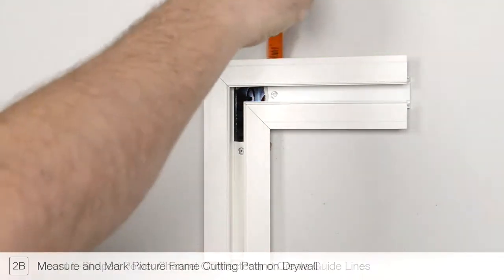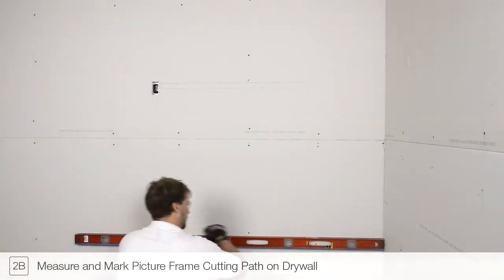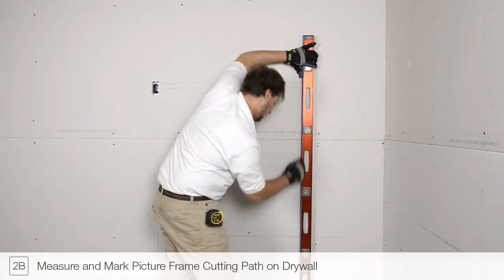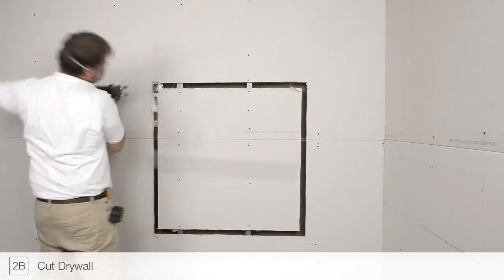Use the channel width behind the mounting flange to mark the drywall. Using the marked channel width, mark the picture frame cutting path on the drywall. Cut the drywall using a jab saw or other appropriate tool.